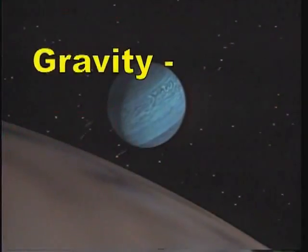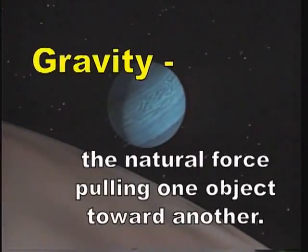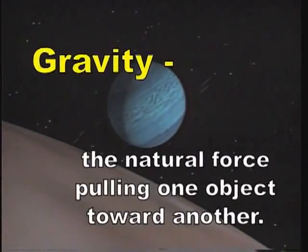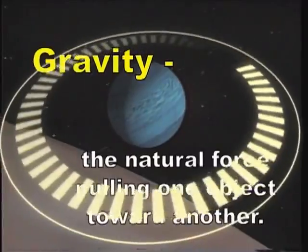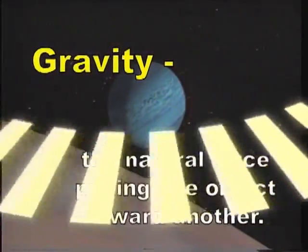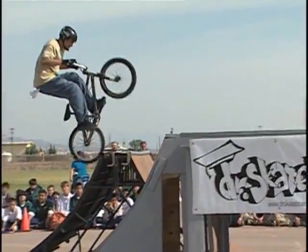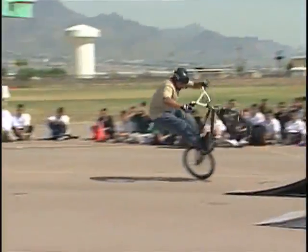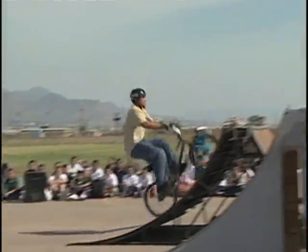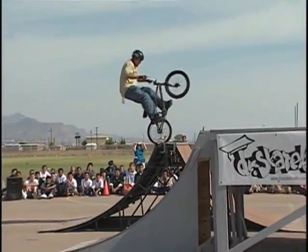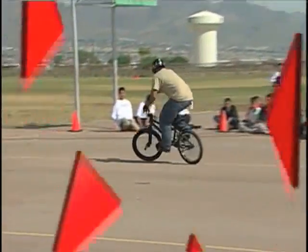Gravity is one force that riders must deal with at every turn. Gravity is the downward pull that objects exert on each other due to their masses. When gravity wins, the rider usually ends up on the ground. If the rider counters the gravitational force correctly, a trick can be successful.